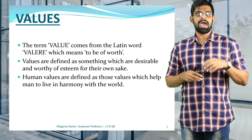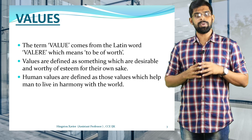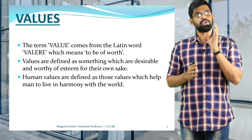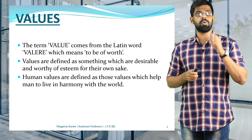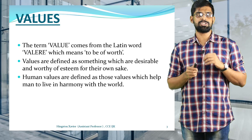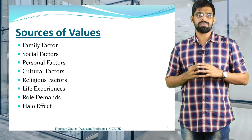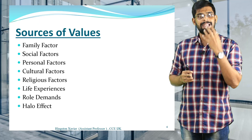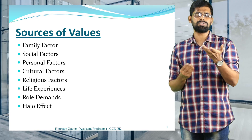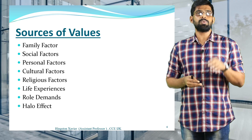But in professional ethics, value means what is worth of or what is actually beneficial for the society. Human values are defined as those values which help a person to live in harmony with the society. Now, what are the sources of human values — that is, where do we get these values from?